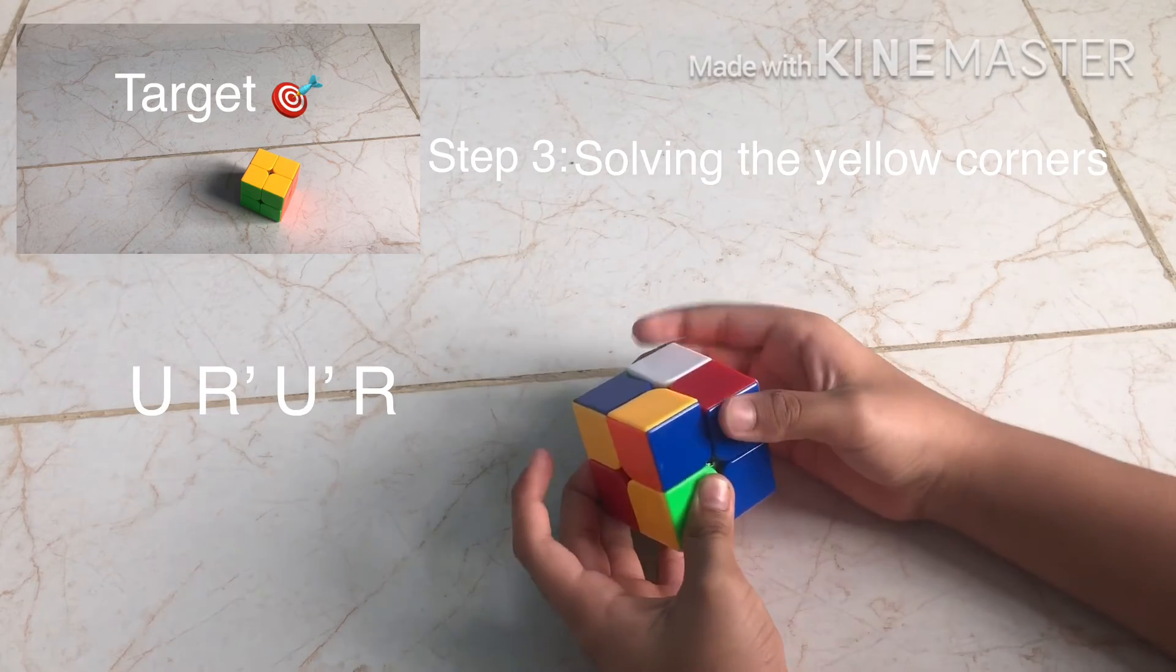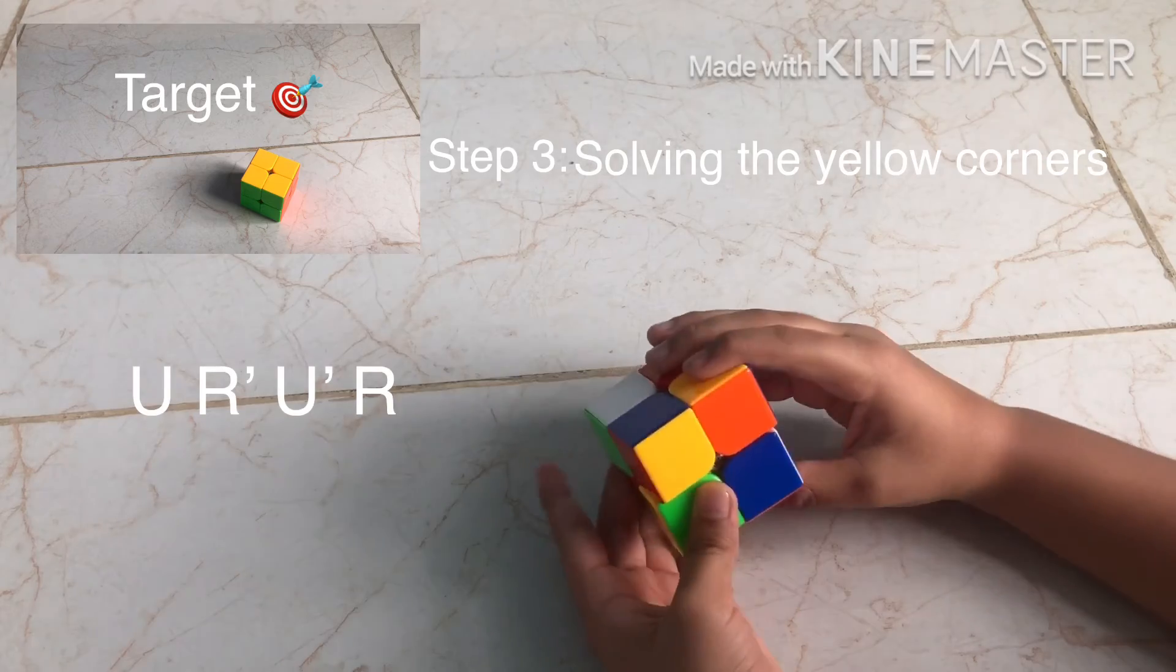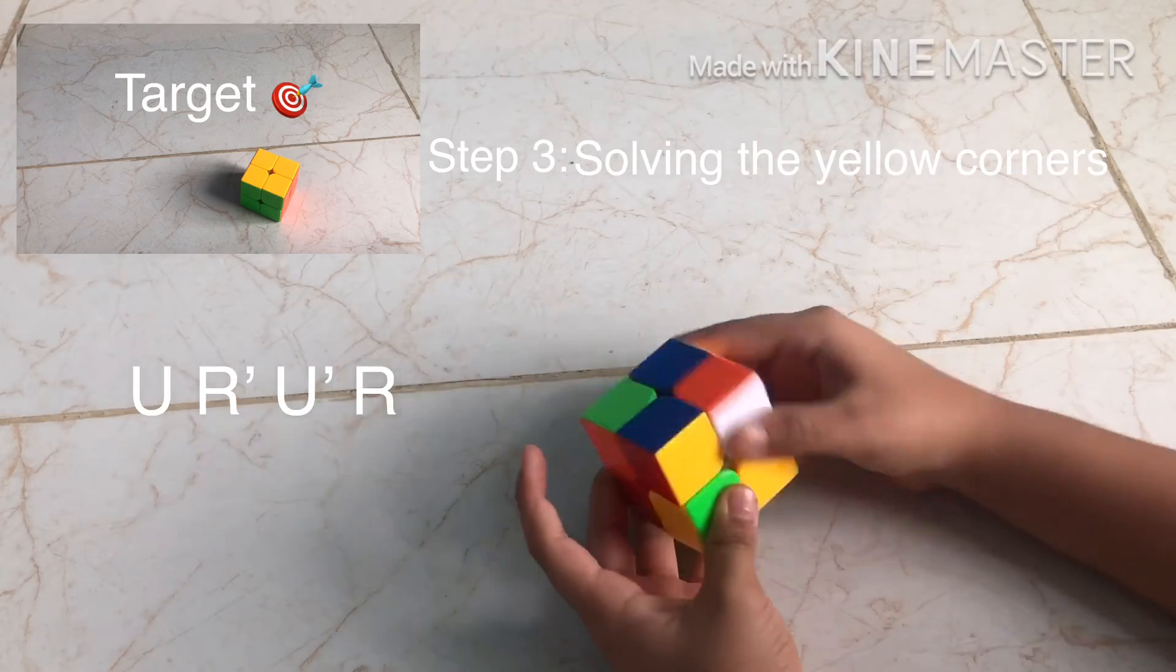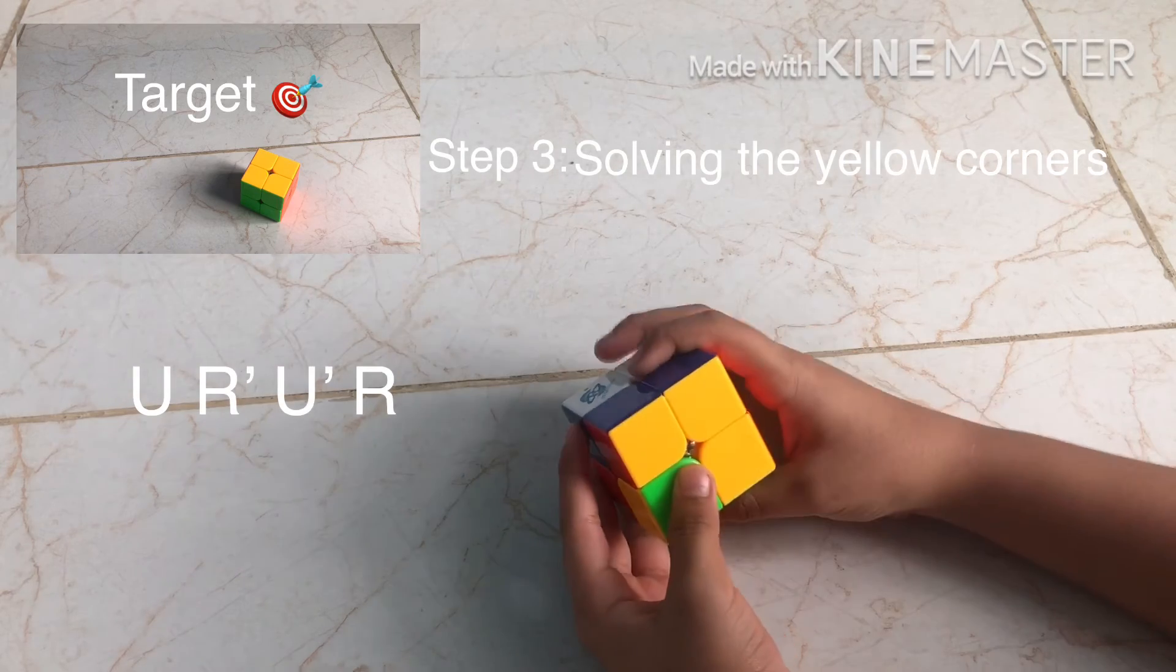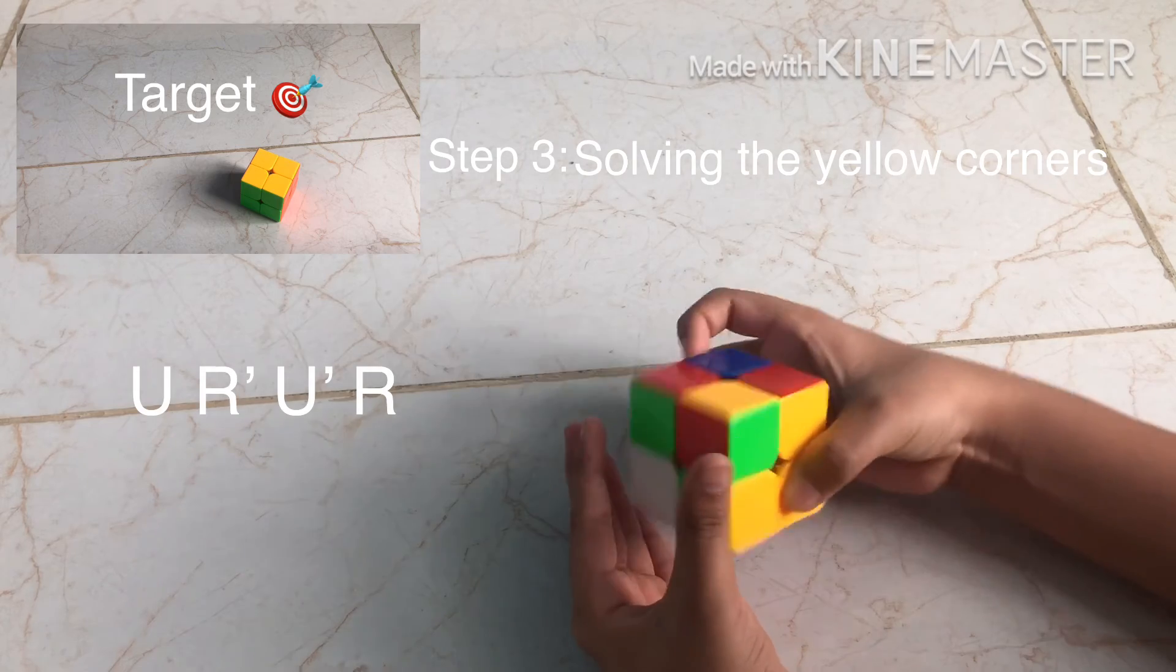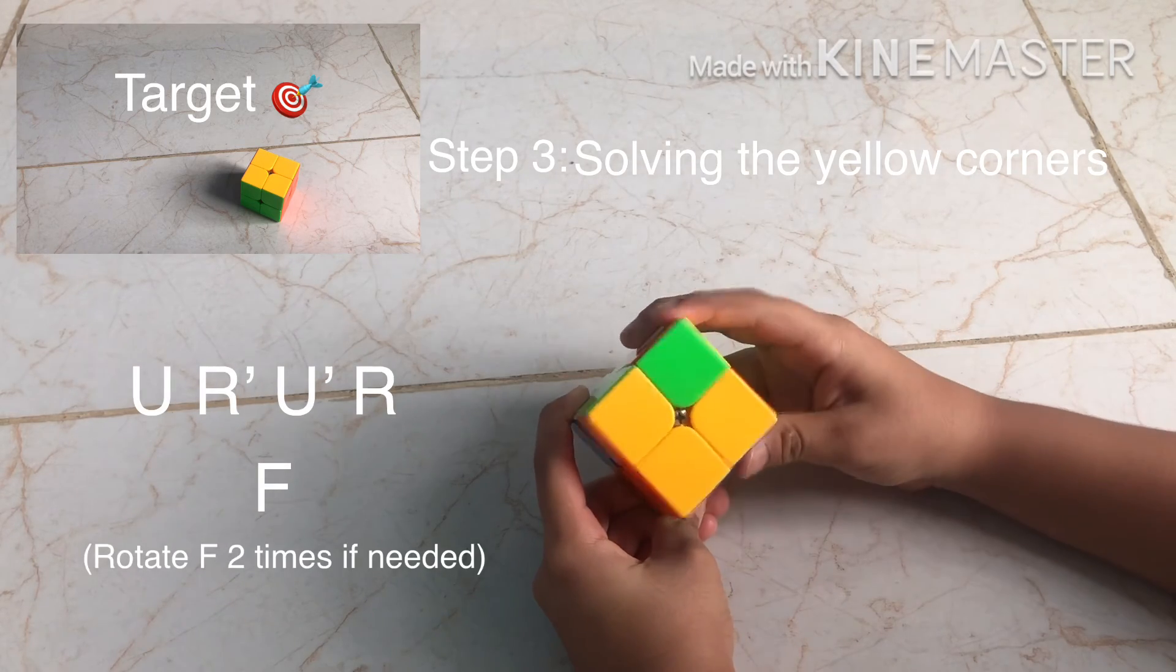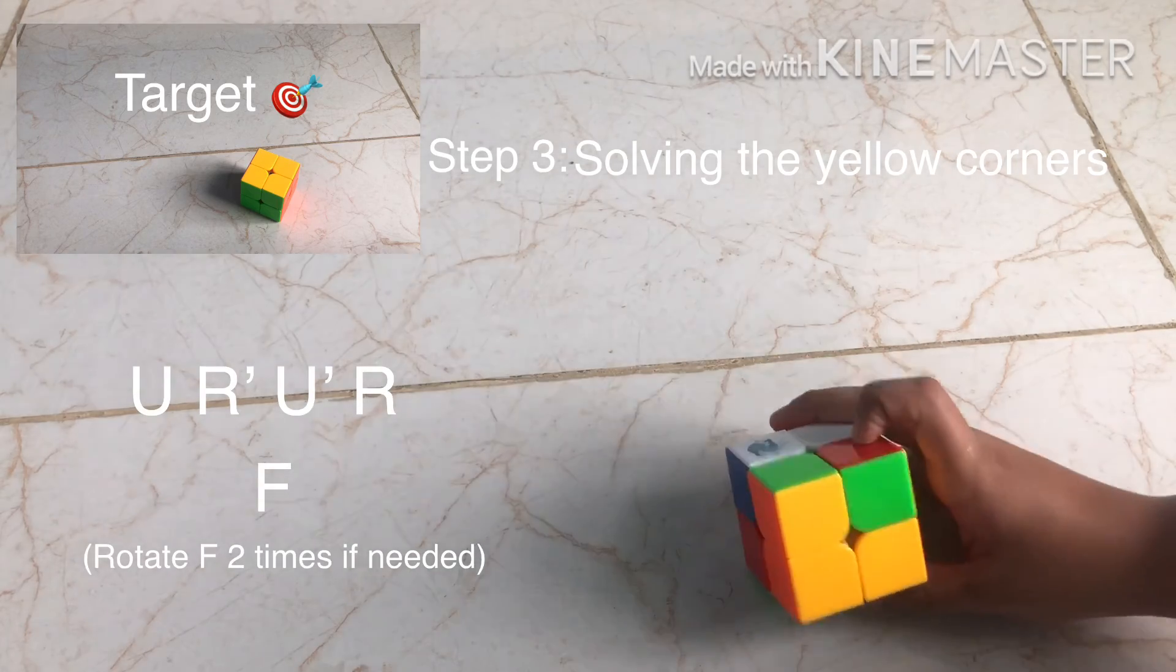U, R apostrophe, U apostrophe, R. And keep doing it until you get the corners placed with the other corners. Done. But, don't rotate the cube like this. Rotate it like this. F. Or, rotate it F two times if needed.